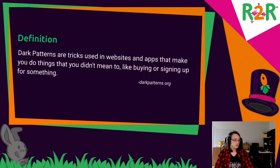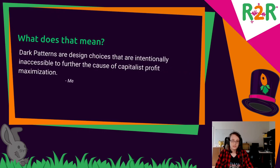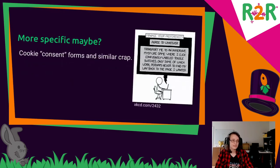What are dark patterns? Dark patterns are tricks used in websites and apps that make you do things that you didn't mean to, like buying or signing up for something — which is the definition from darkpatterns.org, a very good site on the topic. I'm defining them as design choices that are intentionally inaccessible to further capitalist profit maximization. Cookie consent forms are the most common form you encounter basically every day — I wouldn't even call them consent forms, because that's not what consent means.